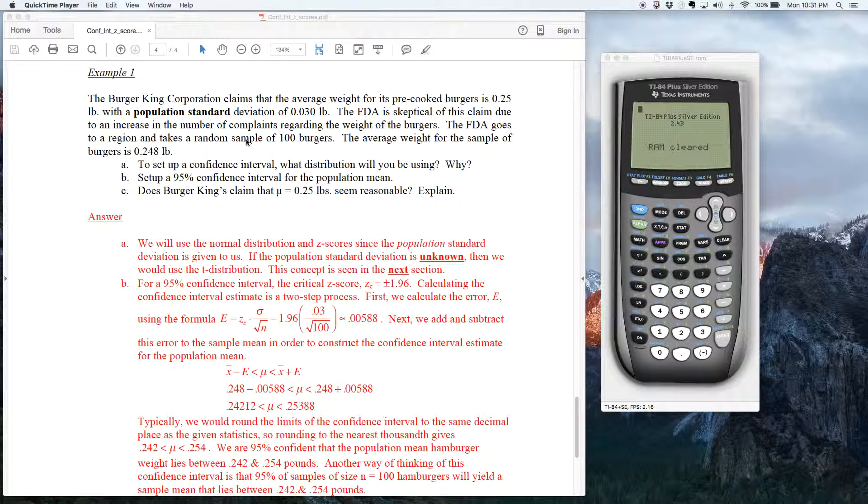Okay, so what I'm going to do right now is show you how to use your TI-84 graphing calculator to calculate a confidence interval for the population mean when the population standard deviation is known.